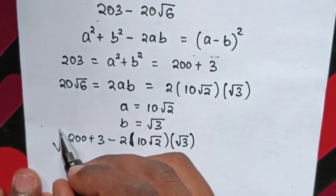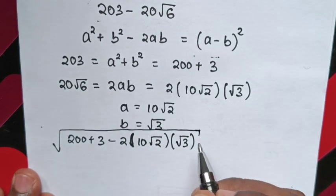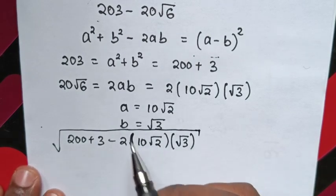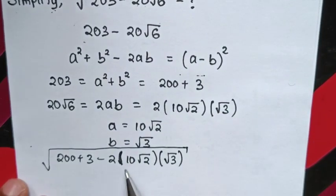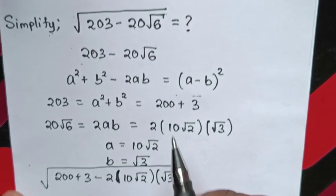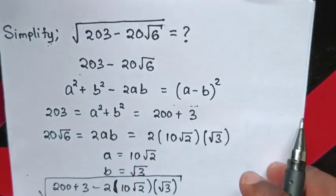We can see 200 plus 3 is 203. 2 times 10 square root of 2 times square root of 3 is 20 square root of 6.